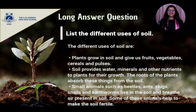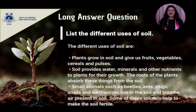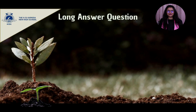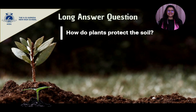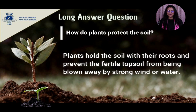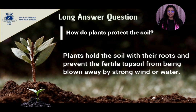Small animals such as beetles, ants, slugs, snails and earthworms live in the soil and breathe air present in soil. Some of these animals help to make the soil fertile. Fourth question: how do plants protect the soil? Answer: plants hold the soil with their roots and prevent the soil from being blown away by strong wind or water.